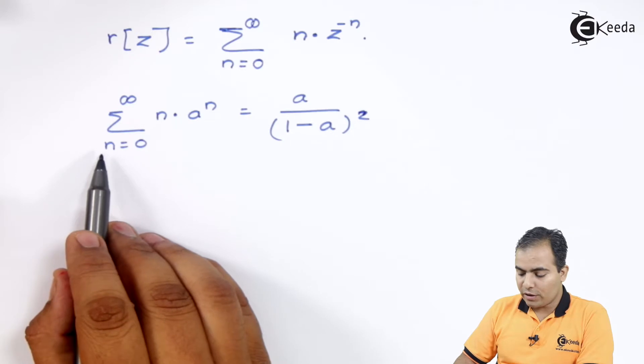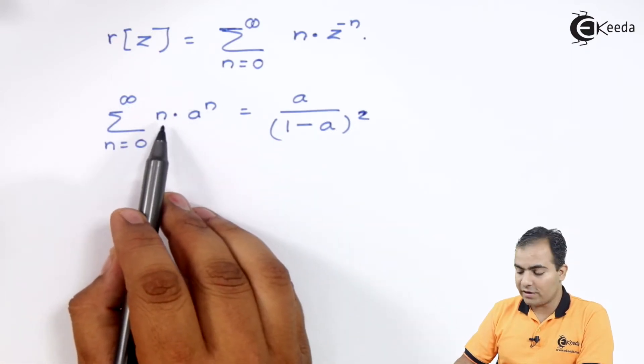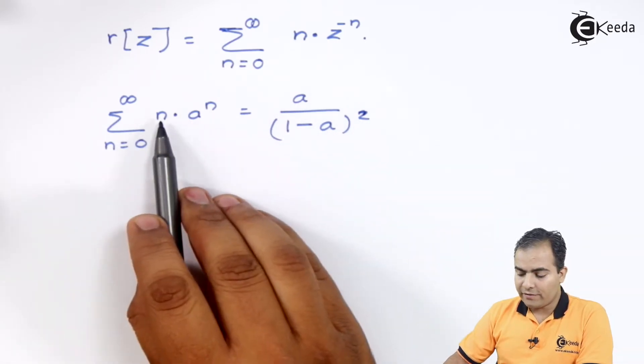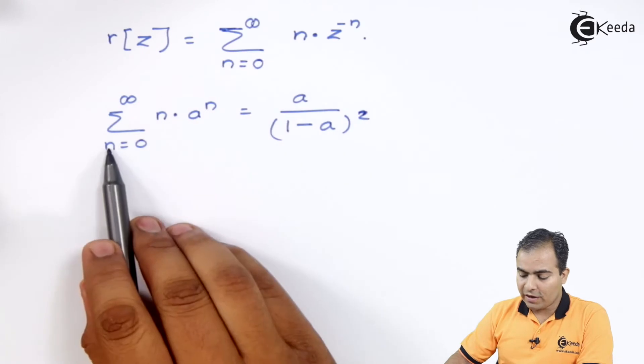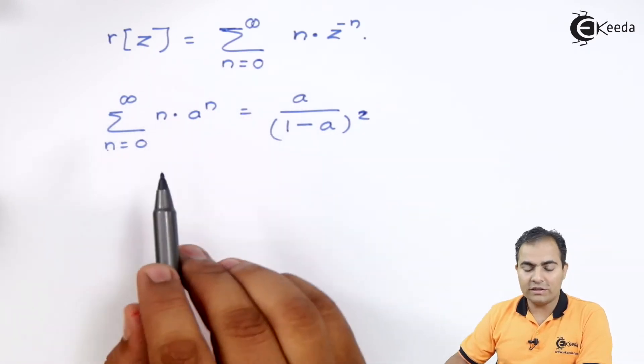When summation value n equals to 0 to infinity and if a raise to n is multiplied by n, then our formula was a upon 1 minus a the whole square. Now, we have n value in both these cases. We have a summation value which varies from n equals 0 to infinity and both these cases it is similar.